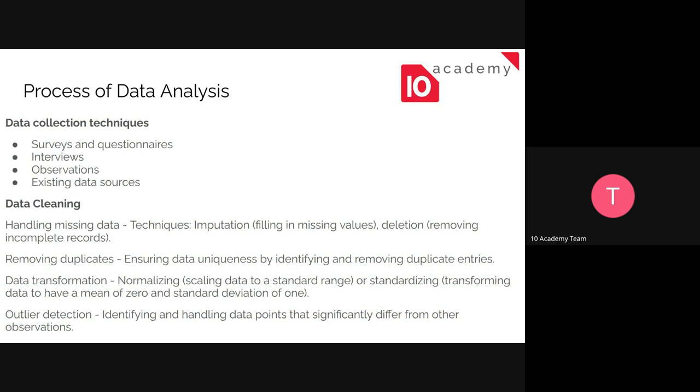And the deletion or removing is just removing the whole row that the null value is found in. So the other thing is removing duplicates. We need to make sure that every row is unique because we don't want to have duplication. So we need to identify and then remove the duplicate entries. But when I say duplicates, I mean the whole row, not just one specific column.